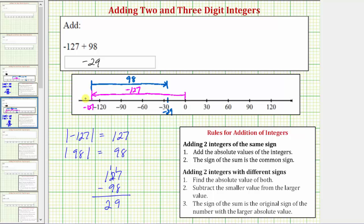Negative 127 plus 98 is equal to negative 29. I hope you found this helpful.